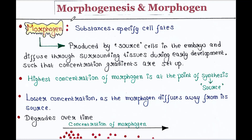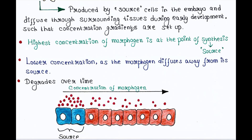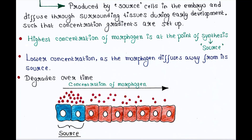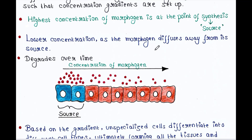Morphogen is a substance — a chemical that specifies cell fates. It is produced by source cells in the embryo and diffuses through surrounding tissues during early development, such that concentration gradients are set up. The highest concentration of morphogen is at the point of synthesis, that is the source cell, and lower concentration as the morphogen diffuses away from its source. Ultimately it degrades over time.